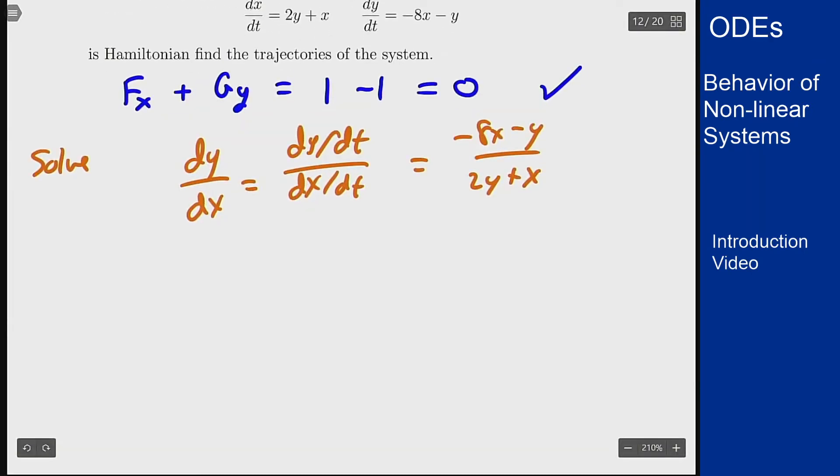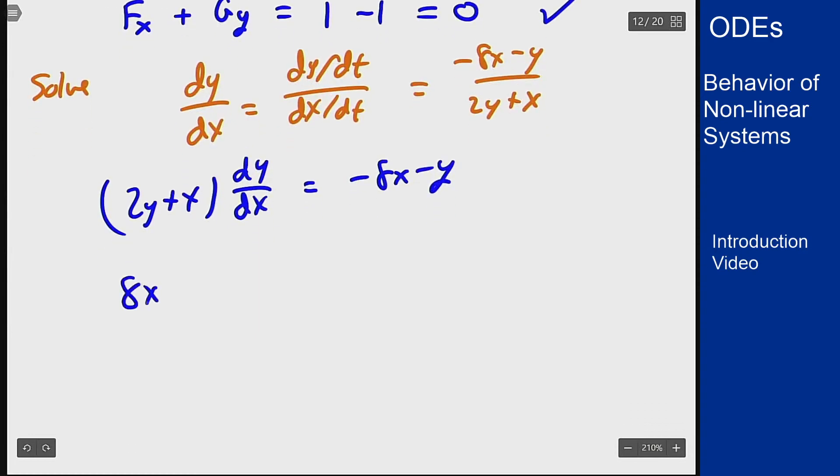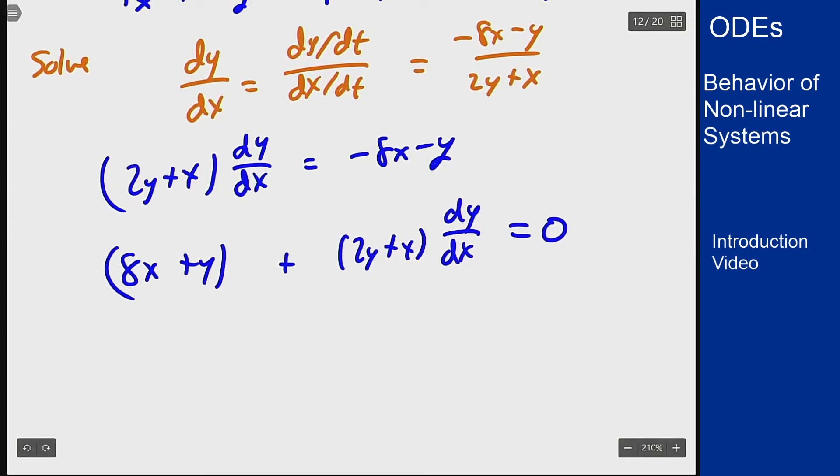So if I multiply both sides by the 2y plus x, I get (2y + x) times dy/dx equals negative 8x minus y. Add that over, 8x plus y plus (2y + x) dy/dx equals zero. This looks like an exact equation. This is why these are all related and why a lot of the ideas seem the same. This is exact because I differentiate the first one in y, I get 1, second one in x, I get 1. I integrate and try to solve.